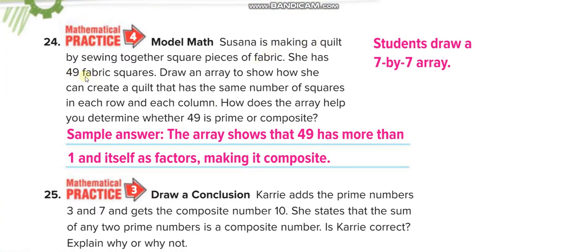Forty-nine is a composite number because seven times seven equals 49. It has more than one and itself as factors, making it composite.